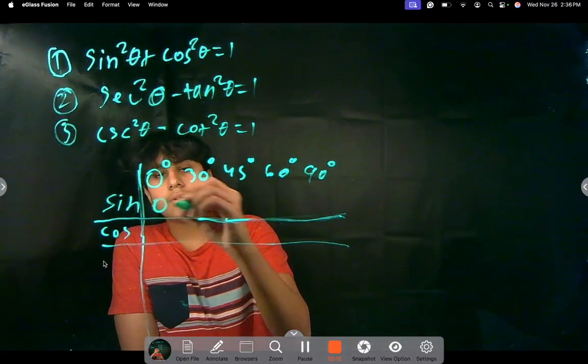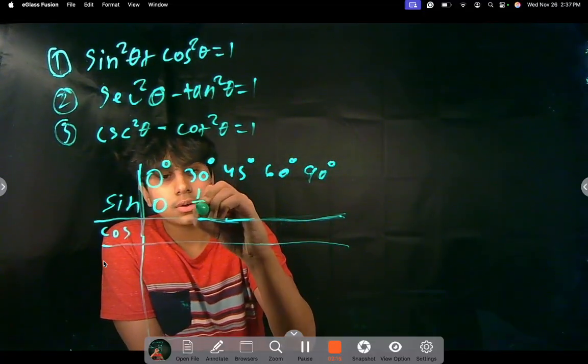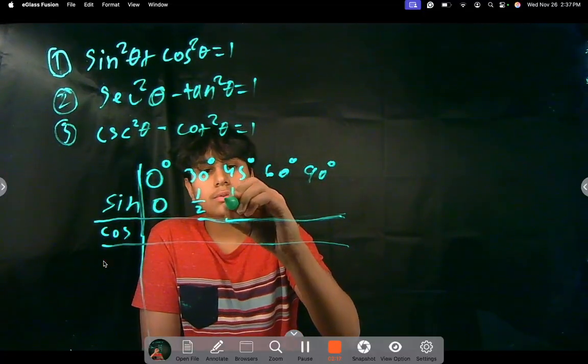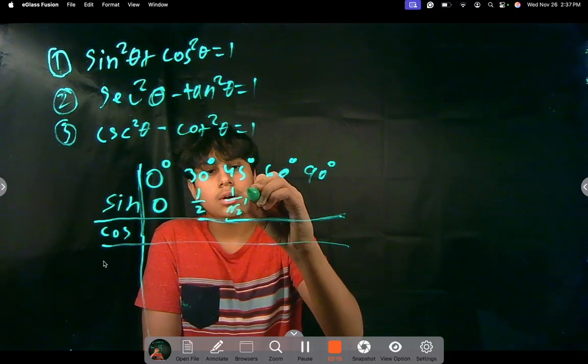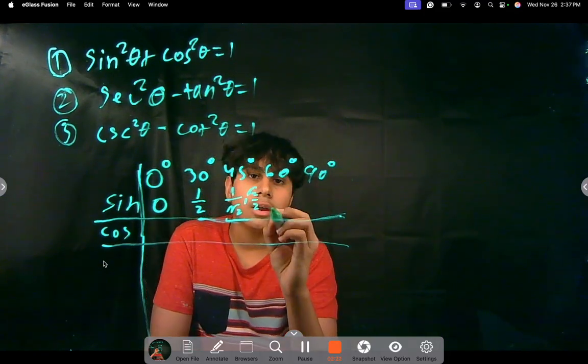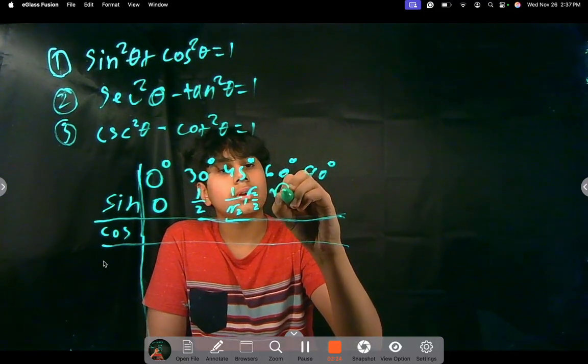Well, for 0 degrees, sine of 0 is just 0. Sine of 30 is 1 half. Sine of 45 is 1 over root 2, or root 2 over 2 if you rationalize that. For 60 degrees, it's root 3 over 2.